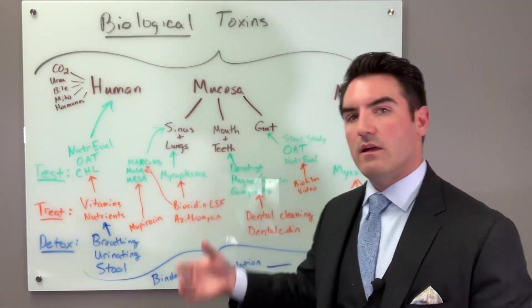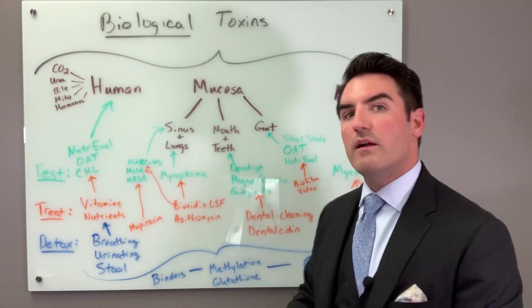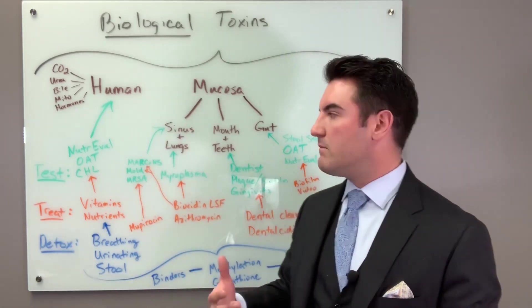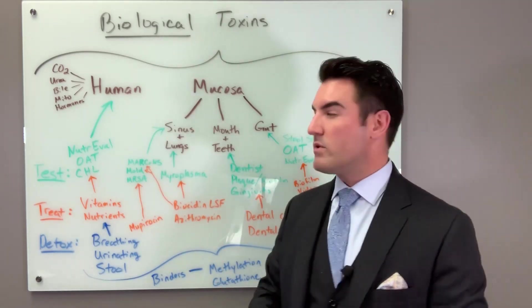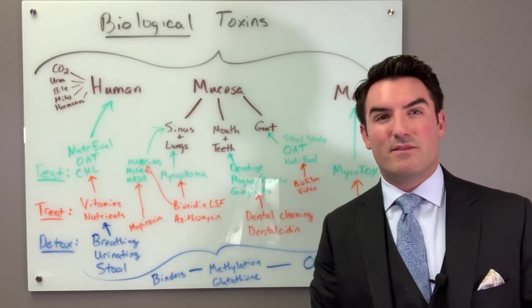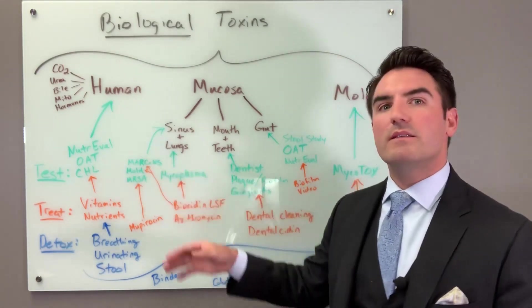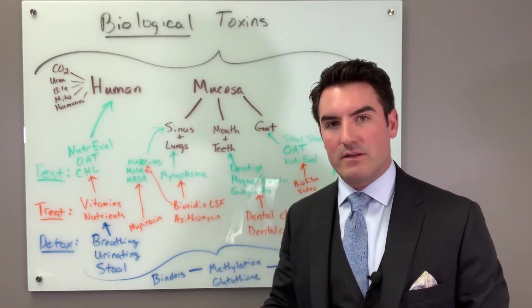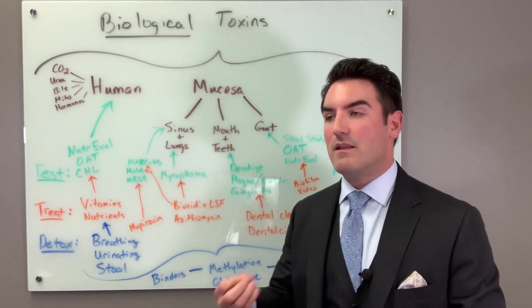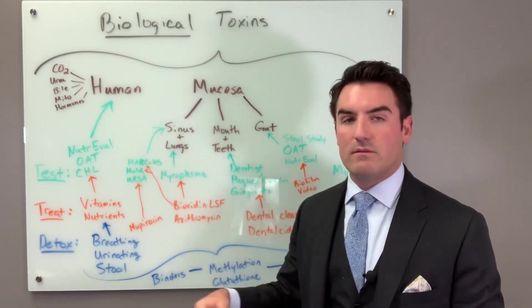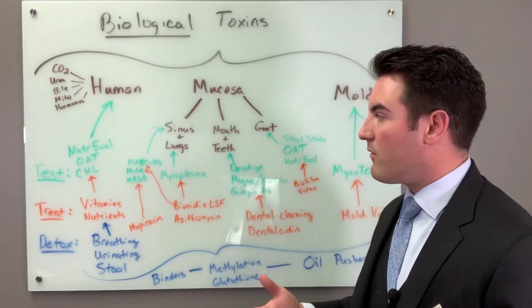So to the sinus and lungs, we could talk about this forever, but I want to point out a few things. Number one is Marcon. This is relatively new to the scene but important. Marcon stands for Multiple Antibiotic Resistant Coagulase Negative Staphylococcus. That does not matter so much, it just makes me look smart to say it all. But Marcon is basically a very nasty bacteria that lives in your sinuses, loves to live there. It's kind of like MRSA, which is also on my list - MRSA, which is methicillin-resistant staph aureus.